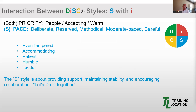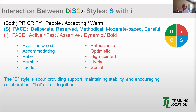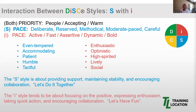The I has a more active, faster, assertive, dynamic, maybe bold pace. When we combine the I's unique pace and priority bearings, we see refined descriptors such as enthusiastic, optimistic, high-spirited, lively, and social. The I style tends to be about focusing on the positive, expressing enthusiasm, taking quick action, and encouraging collaboration. If they had a motto, it would be: let's have fun.